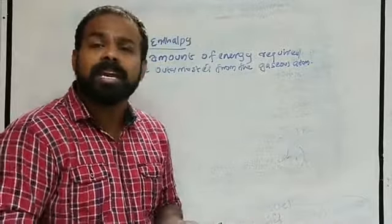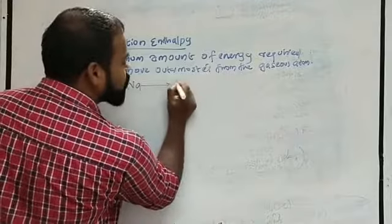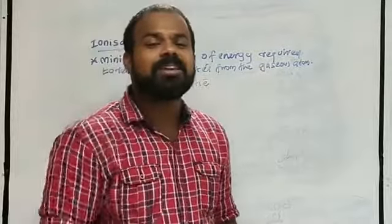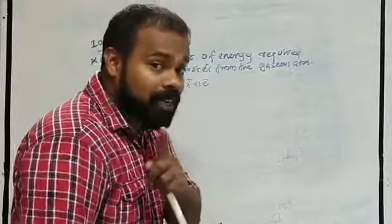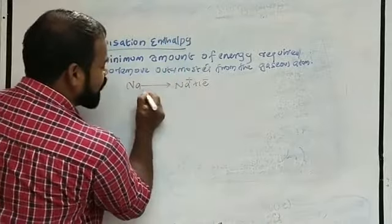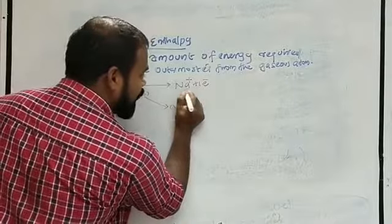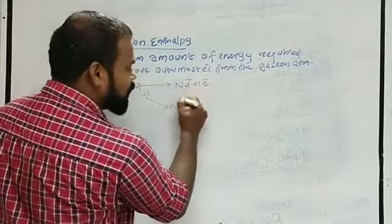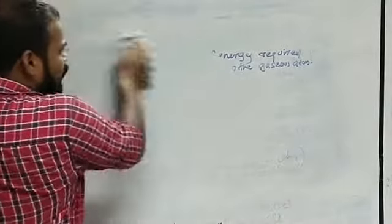For example, if I choose sodium: sodium may be converted to Na⁺ — one electron can be removed. But sodium will not donate an electron on its own; we need to apply energy. Sodium is first in solid form. We convert solid sodium to gaseous sodium, and then it is converted to a positive ion by donating one electron. The energy required for this is called ionization enthalpy.